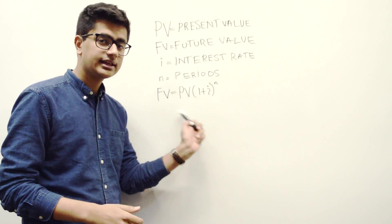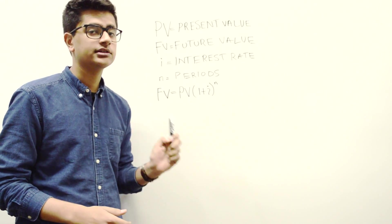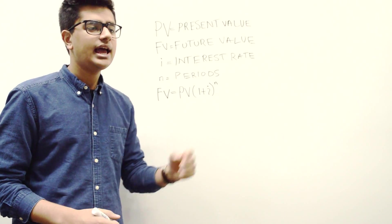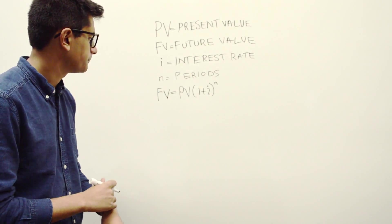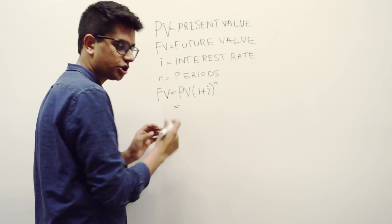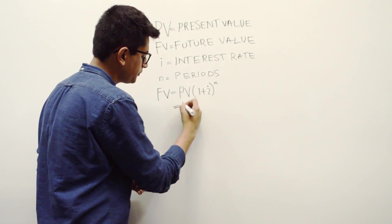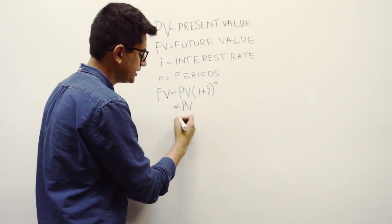And then we finally get to this equation, which is extremely important for tackling all time value of money problems and future annuity problems, which I will discuss in a future video. So, essentially, you have your present value, I'll start off with the right side of the equation. You have your present value, let's say we have $100.